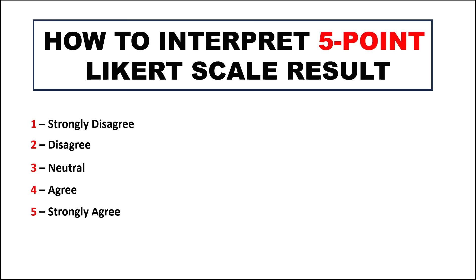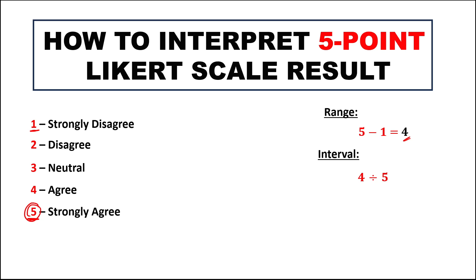To create a Likert scale, first we need to find the range. To find the range, we take the highest number minus the smallest number, so the range is equal to 4. Then from the range we can find the interval. To find the interval, we divide the range by the highest number, so the interval is equal to 0.80.